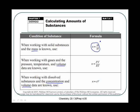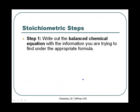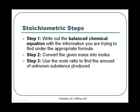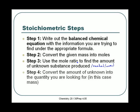The basic steps can always be written out. It's almost always a four-step question. Step one is getting that balanced chemical equation with all your states written down. Then you're going to put the information you're trying to find under the appropriate formula. Next you're going to convert the given mass into moles, or if it's not mass it will be a concentration. Then we're going to use the mole ratio to find the amount of unknown substance either produced or needed. And finally we convert the amount of unknown into the quantity we're looking for — in this case, mass.